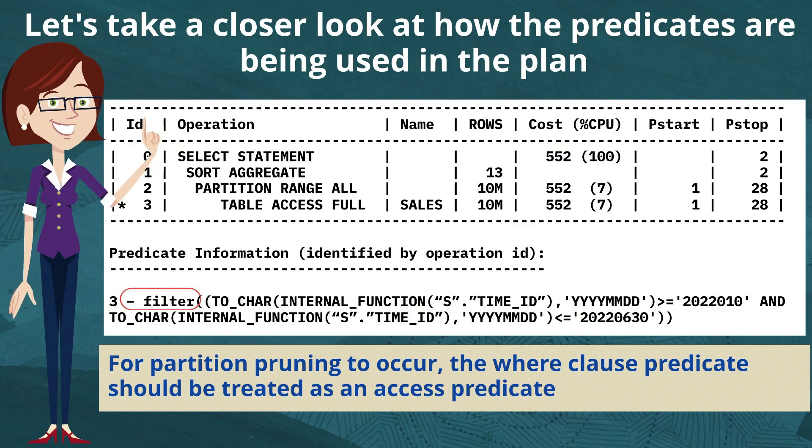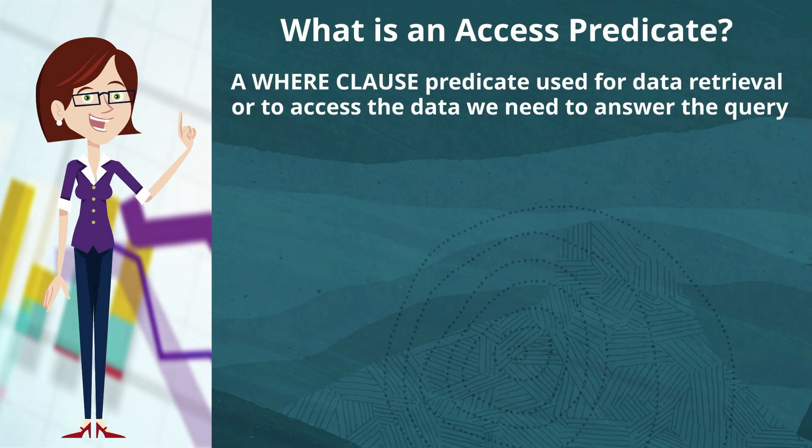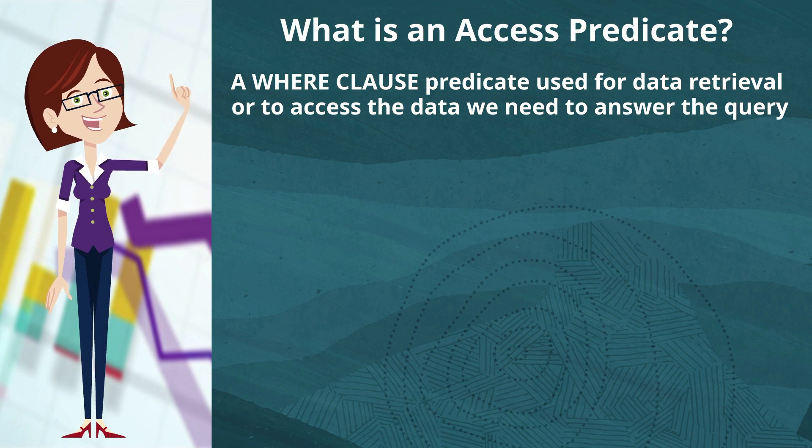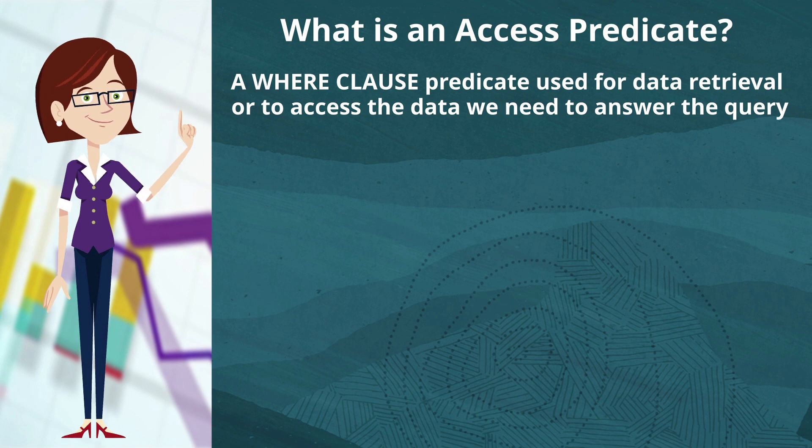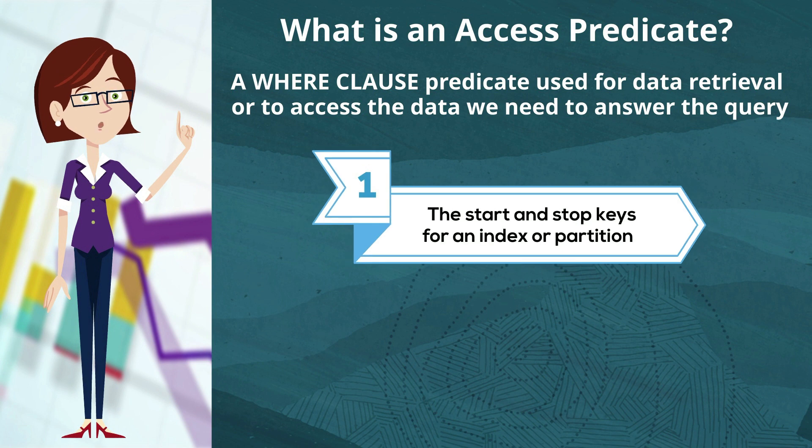Now, if you're not sure what an access predicate is, let's do a quick recap. An access predicate is a where clause predicate that's used for data retrieval or to access the data we need to answer the query. And you typically see an access predicate underneath the execution plan in the predicate information section.